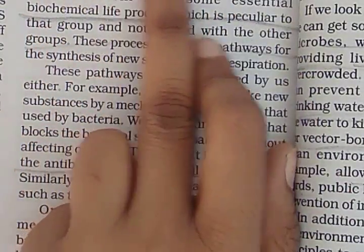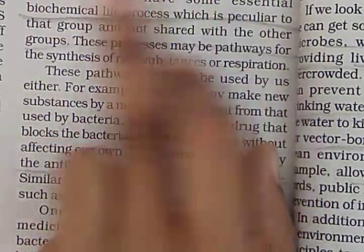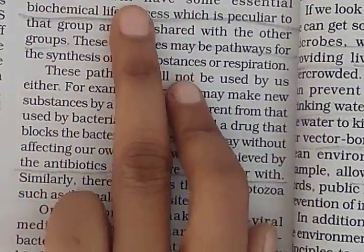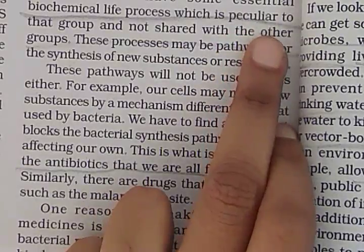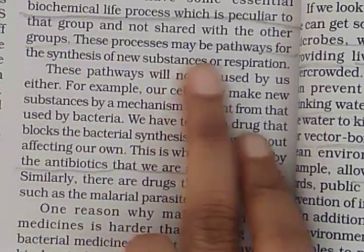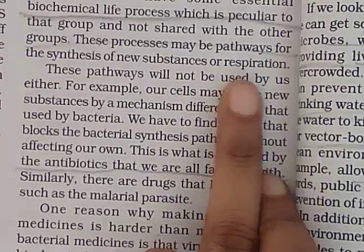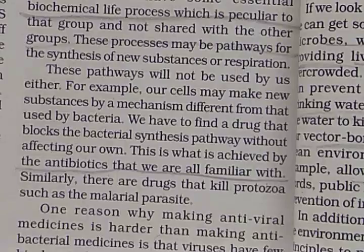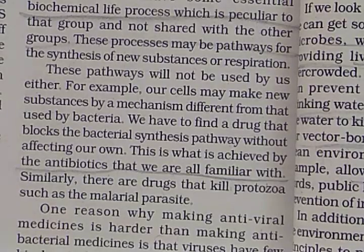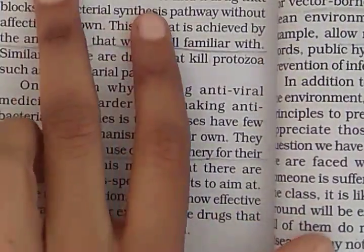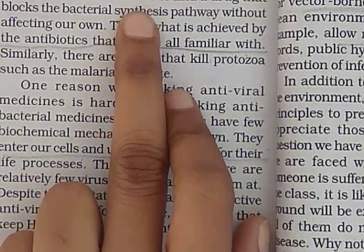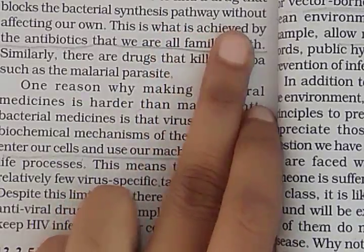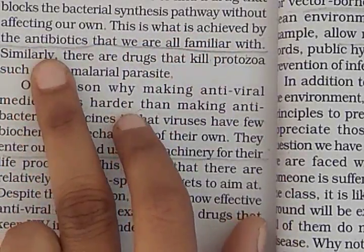One way is to use medicine that kills microbes. We have seen earlier that microbes can be classified into different categories: virus, bacteria, fungi, and protozoa. Each of these groups of organisms will have some essential biochemical life processes which are peculiar to that group and not shared with others. These processes may be pathways for the synthesis of new substances or respiration. Our cells may make new substances by a mechanism different from that used by bacteria. We need to find a drug that blocks the bacterial synthesis pathway without affecting our own — this is what is achieved by antibiotics.